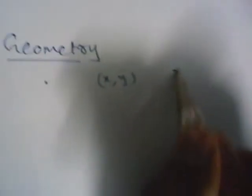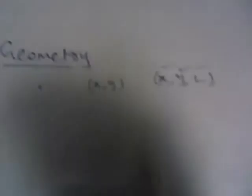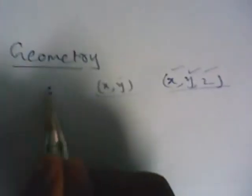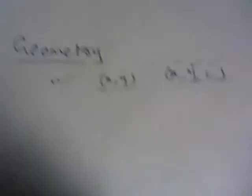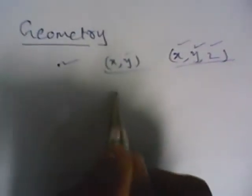If this point lies in three-dimensional space, then it contains three coordinates: X, Y, and Z. Here X is the first coordinate, Y is the second coordinate, and Z is the third coordinate.